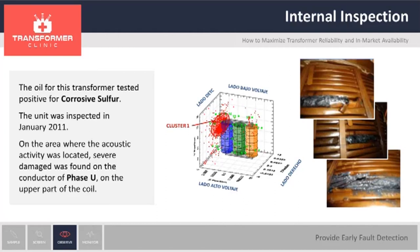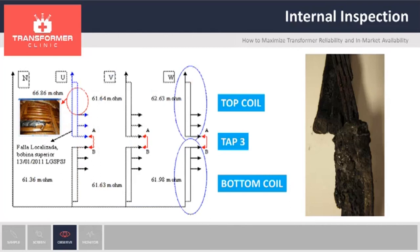After doing the investigation, what they found is that during manufacturing, the manufacturer welded two coils at that location. After doing the weld, instead of putting paper as insulation, they didn't put any varnish on top of that. So the copper was not protected, and what you are seeing on the photograph is the damage of the corrosive sulfur attack on the winding. They did electrical testing and also saw that the phase yield resistance was higher — 66.86 milliamps. On the right, you can see a closer view of the weld, confirming that it was a corrosive sulfur attack.